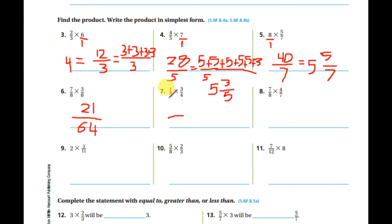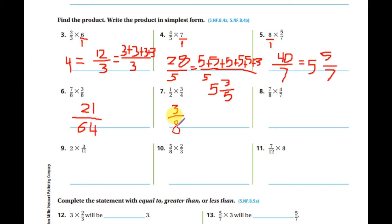Next number: two times four. Multiply denominator by denominator, numerator by numerator — one times three equals three, and two times four equals eight. This is a proper fraction, so leave it as three-eighths.